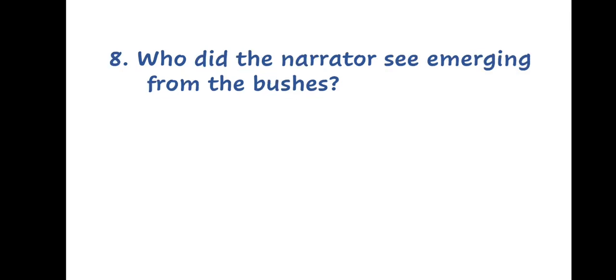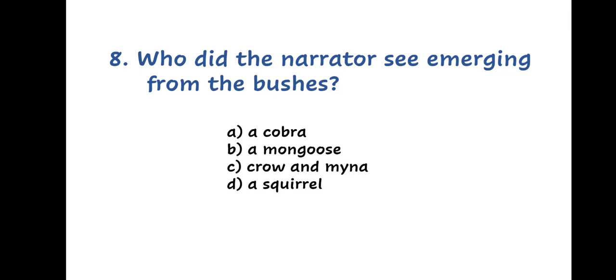Question 8. Who did the narrator see emerging from the bushes? A. A cobra, B. A mongoose, C. Crow and myna, or D. A squirrel.